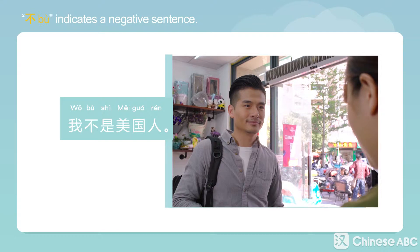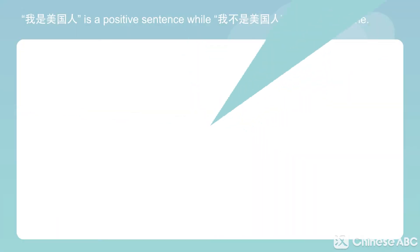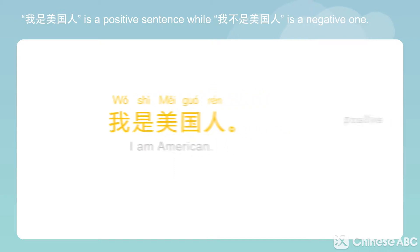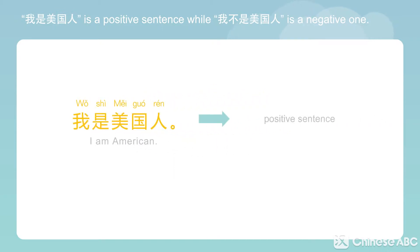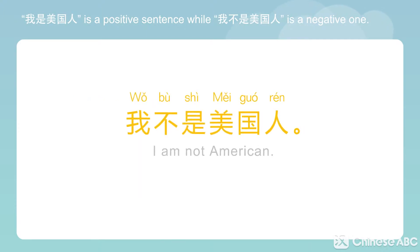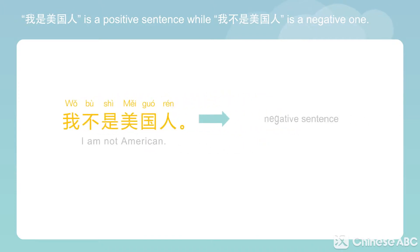我是美国人 is a positive sentence, while 我不是美国人 is a negative one.